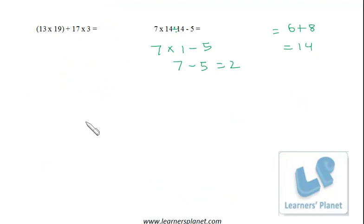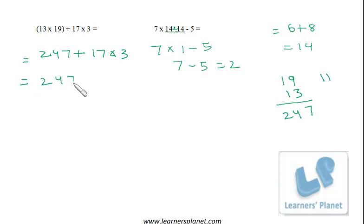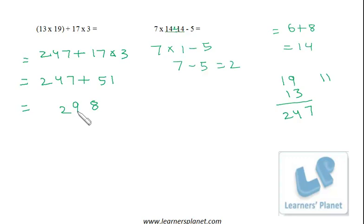Now try this: 13 × 19 inside the bracket. 13 × 9 = 117, write 7 carry 11; 13 + 11 = 24, so 13 × 19 = 247. Inside the bracket it is 247, then plus 17 × 3 = 51. Now add: 247 + 51 = 298. So the answer is 298.